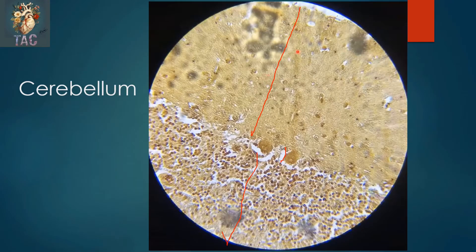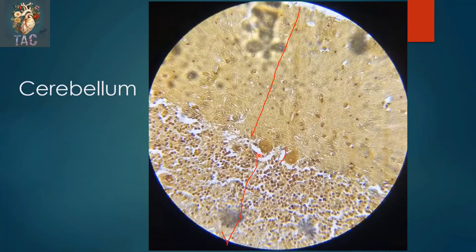Another beautiful slide at higher magnification. You can see the molecular layer, which contains synapses between axons and dendrites of different neurons. These are the Purkinje cell layer, in which you can see these large, flask-shaped Purkinje cells with a prominent nucleus. Then this is the molecular layer.